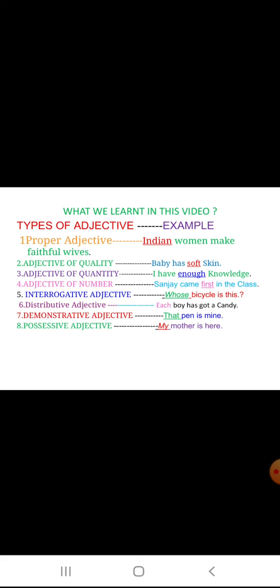Now let us revise what we have learned today. We learned what is an adjective, then the types of adjectives. Proper adjectives are formed from proper nouns, especially from the names of places and persons — for example, Indian women make faithful wives. Adjective of quality: baby has soft skin — soft is a quality, answering what kind. Adjective of quantity: I have enough knowledge — enough answers how much. Adjective of number: Sanjay came first in the class — first answers how many.